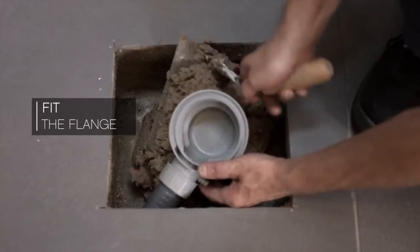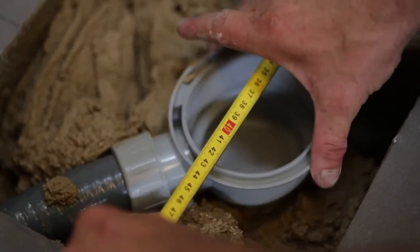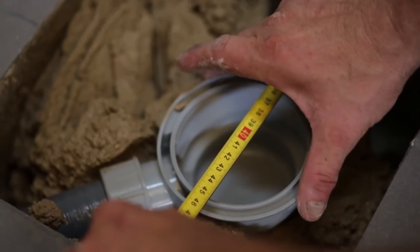Prepare the mortar and fill the space around the valve, making sure it is perfectly centred with respect to the shower tray drain hole to be fitted.